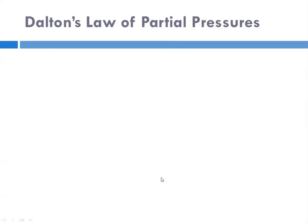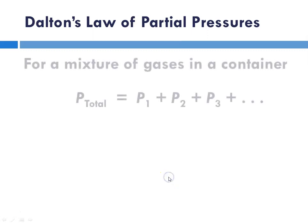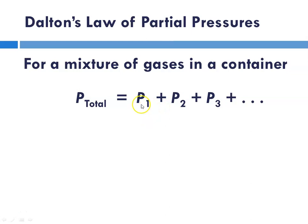So what is Dalton's Law? Well, what it states is that for a mixture of gases in a container, the total pressure is equal to the sum of the partial pressures of all of the individual gases. So if you think about our air that's surrounding us, our atmosphere, it's made up of all different gases.